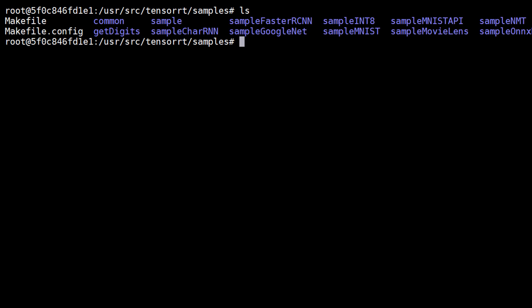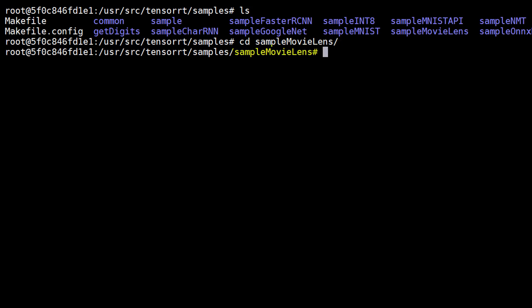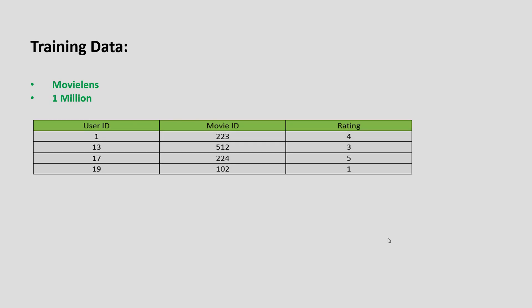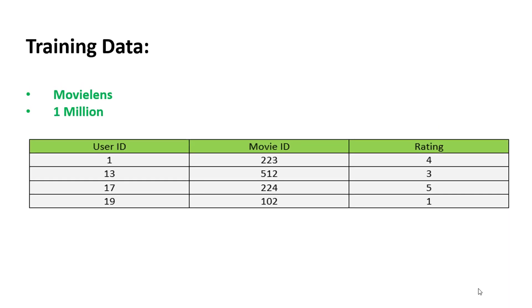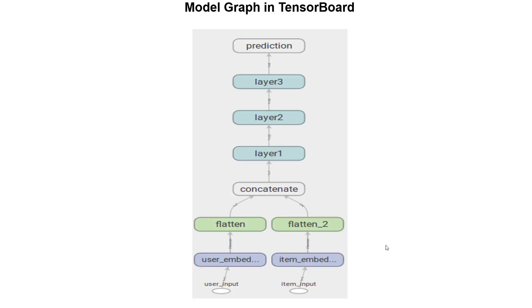Today let's focus on steps needed to accelerate the inference of recommenders by looking at the Movie Lens sample. This sample uses the Movie Lens 1 million dataset. The training model uses multi-layer perceptrons to recapture the relationship between users and movie ratings.